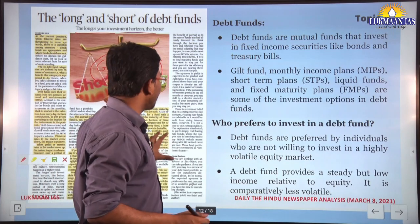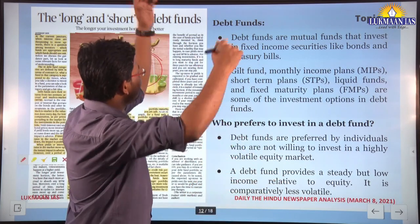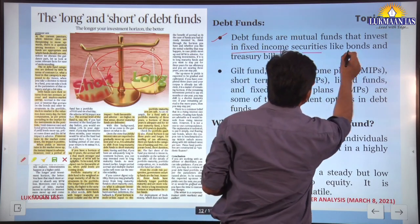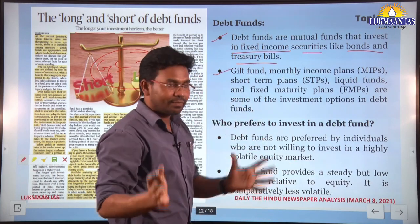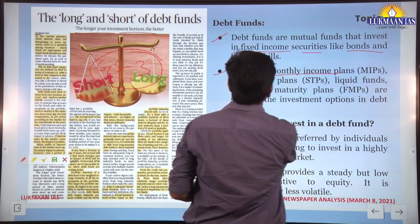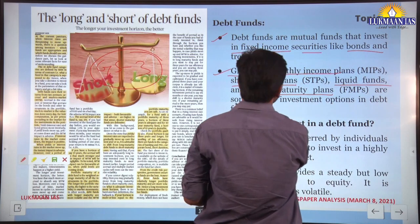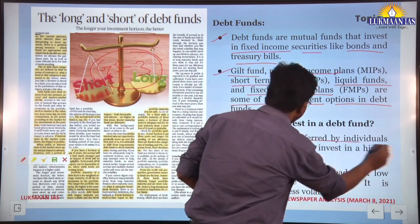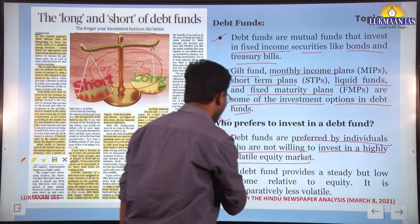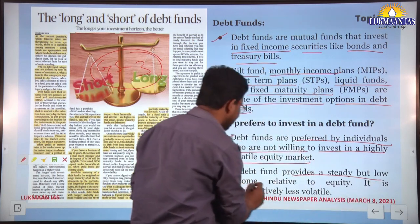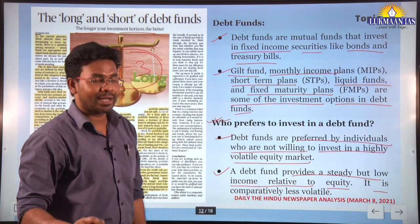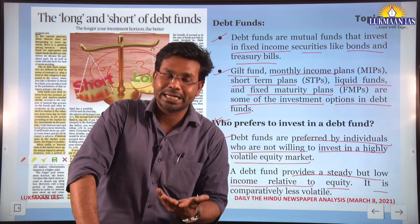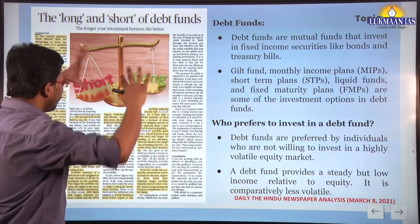Debt funds are mutual funds that invest in fixed income securities like bonds and treasury bills. Examples include gilt funds, monthly income plans, short-term plans, liquid funds, and fixed maturity plans. Debt funds are preferred by individuals who are not willing to invest in the highly volatile equity market, as debt funds provide a steady but slower income with comparatively less volatility.